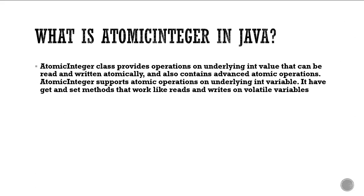Next question: What is AtomicInteger in Java? The AtomicInteger class provides operations on an underlying int value that can be read and written atomically, and also contains advanced atomic operations. Using read/write methods like get and set, we can make changes on this AtomicInteger, which has a huge role especially in a multi-threaded environment.